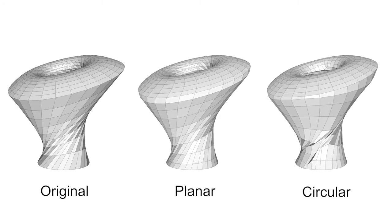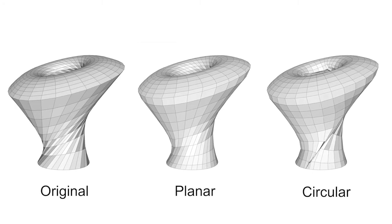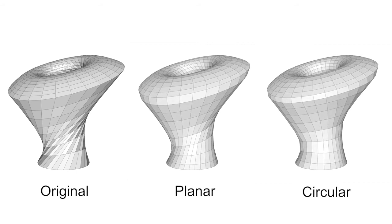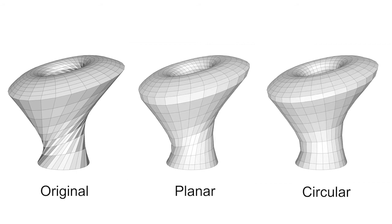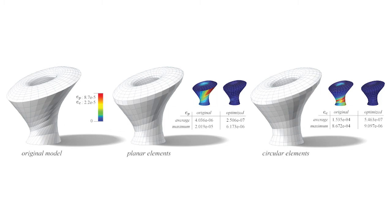Here we post-rationalize the given free-form design by prescribing planarity and circular constraints on the mesh hull. These properties are directly related to benefits in physical production.